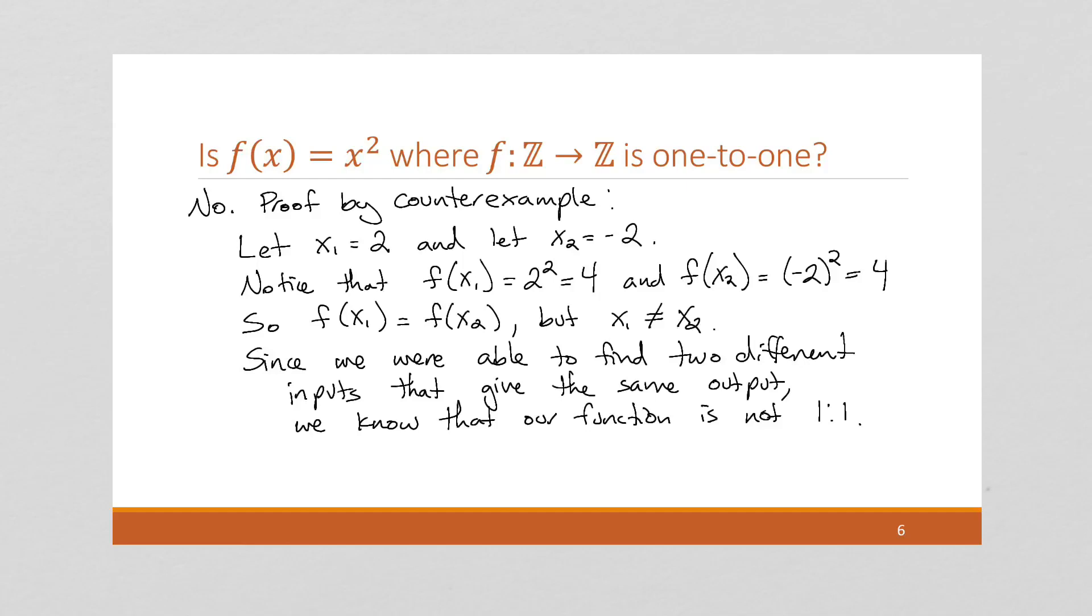And so, since we were able to find two different inputs with the same output, we know that our function is not one-to-one. It's still a function, but it's not one-to-one. So the way you want to think about one-to-one is just, do I always get a unique answer? Or will my answer ever be duplicated? In this case, the answer was 4, and it was indeed duplicated for different inputs. So it's not one-to-one.